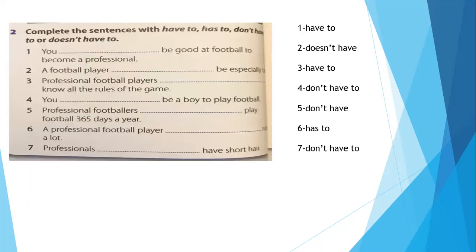Now let's move to question number two on the same page. We are going to use 'have to', 'has to', 'don't have to', or 'doesn't have to'. For example: you have to be good at football to become a professional. A football player — it's singular — doesn't have to be special at all.